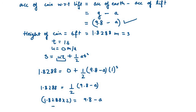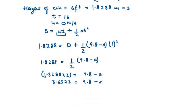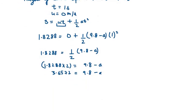So we get 3.6576 equals 9.8 minus A. If we move A to the left hand side, it becomes positive A.